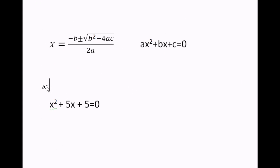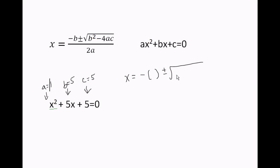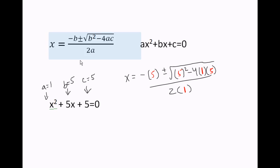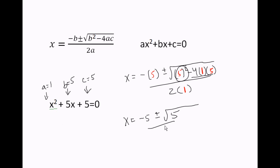Let's try one more. For this problem, a equals 1, b equals 5, and c equals 5. Plugging them into the formula: x equals negative b plus or minus the square root of b squared minus 4 times a times c, all over 2a. With a=1, b=5, c=5, we get x equals negative 5 plus or minus the square root of 25 minus 20, which is 5 inside the square root, over 2.